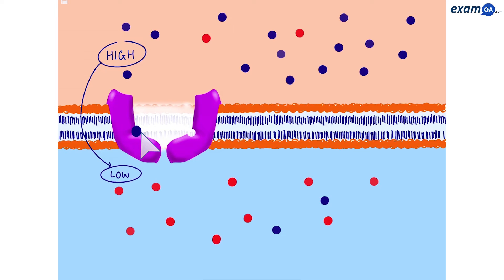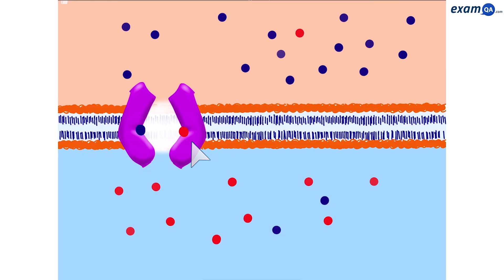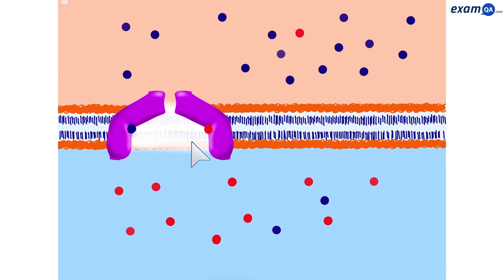But before the carrier protein changes shape, the red dot, who's moving from a low to a high concentration, will quickly take its place in as well. Since there's a space available for it, the red dot will also take a place within the carrier protein. Now the carrier protein will change shape and both molecules will be released on the other side.